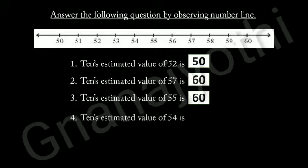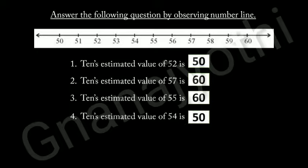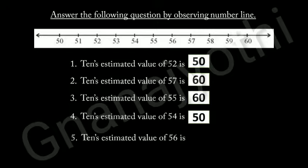Look at question 4: 10's estimated value of 54 is 50, because 54 is near to 50. Look at question 5: 10's estimated value of 56 is 60, because 56 is near to 60.